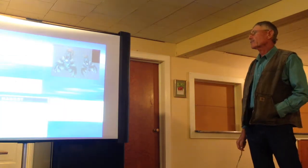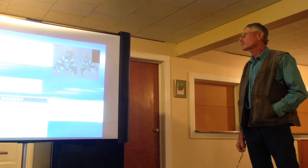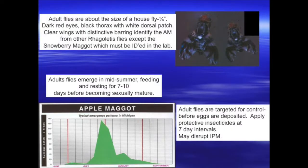The fly is about the size of a housefly, a quarter inch or so. Dark red eyes, black thorax, white dorsal patch, clear wings with distinctive wing barring, identifying the apple maggot from other rhagoletis flies.